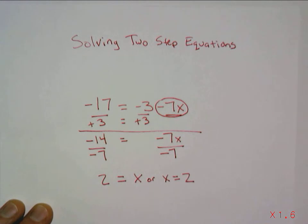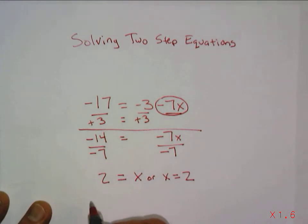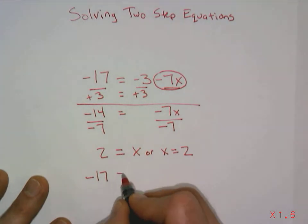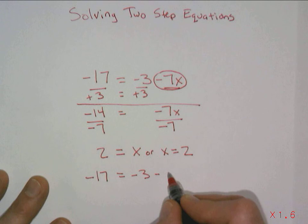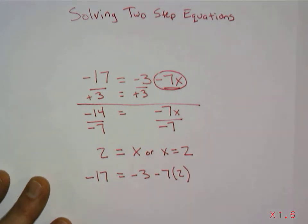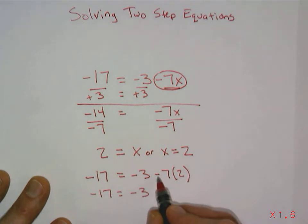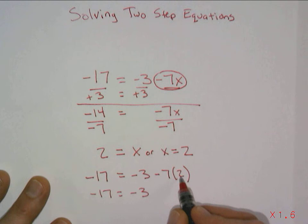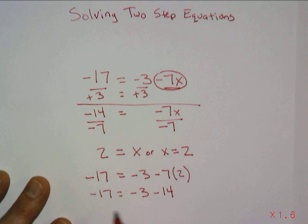2 equals x or x equals 2. And we could check it by putting it back into the equation. Negative 17 equals negative 3 minus 7 times 2. So what we have is negative 17 equals negative 3. A negative 7 times a positive 2 is negative 14. Or you can think of it as minus 14. And the reality is when we take a negative 3 and a negative 14 and put them together, we get negative 17. And so it works.